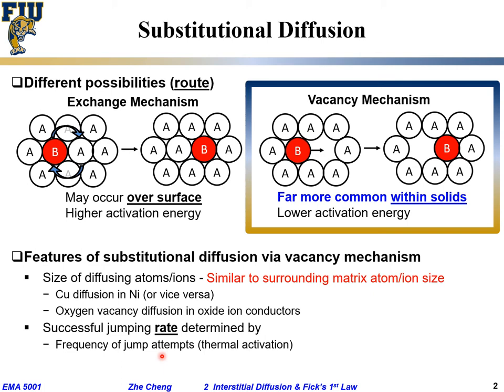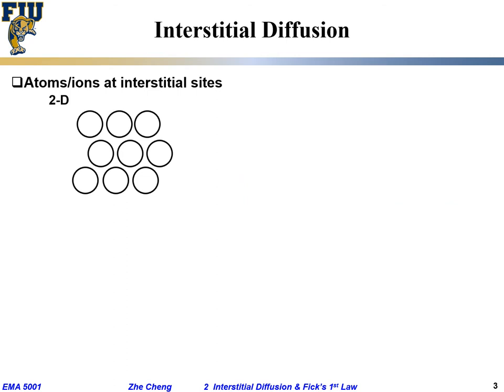But thermal activation alone is not enough — the atom activates but cannot really move. For the vacancy mechanism to work, the atom also needs a nearby vacancy. The vacancy concentration matters: the higher the concentration, the more likelihood that an atom is surrounded by at least one vacancy. The vacancy concentration, from thermodynamics, is determined by temperature — typically the higher the temperature, the more vacancies — but also by so-called intentional doping, where introducing certain impurities may also introduce vacancies. This is substitutional diffusion.